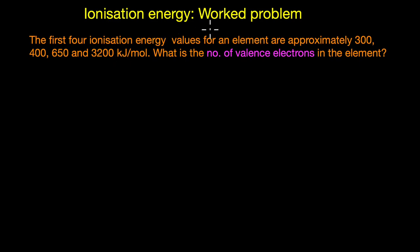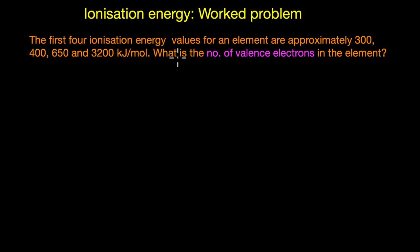In this video we are going to solve a few problems on ionization energy and its trends across the periodic table. The first question states that the first four ionization energy values for an element are approximately 300, 400, 650, and 3200 kilojoules per mole. What is the number of valence electrons in this element?